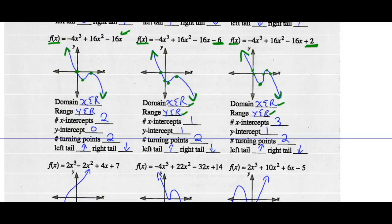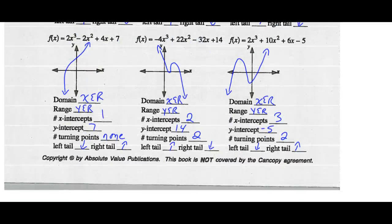For f(x) = 2x³ − 2x² + 4x + 7: domain is any real number, range is any real number. There is one x-intercept. The y-intercept occurs at positive 7. There are no turning points — there is a point of inflection. The left tail goes down while the right tail goes up.